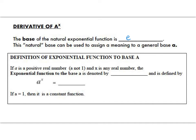So if a is a positive real number and the exponential function is denoted by a to the x, then a to the x is the same thing as we're taking whatever a is and raising it to a power. If a is one, if your base is one, then it's a constant function.